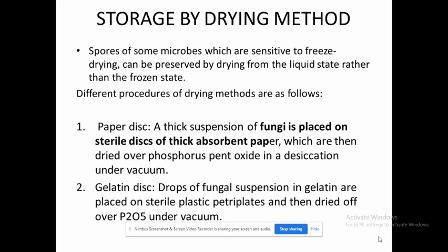Next is storage by drying. The drying method is used mainly for spore storage. Spores of most microbes are sensitive to freezing and freeze drying. Different procedures are adopted for drying the spores. The first is the paper disc method — the fungi is placed on a dry paper disc of thick absorbent paper, then dried over phosphorous pentoxide in a desiccator.